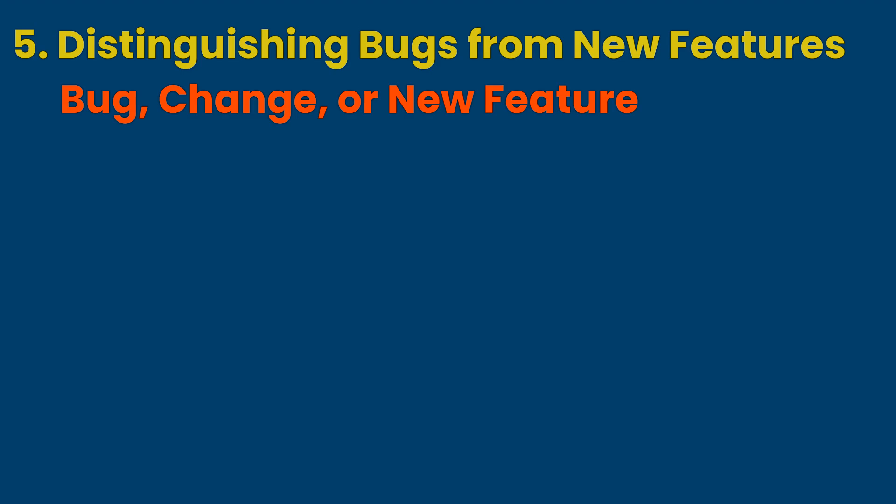Point five: distinguishing bugs from new features. Sometimes what appears to be a bug might actually be an intentional design change or new feature. As Airbnb does not always explain such changes in advance, it can leave users spending a lot of time to understand the nature of the problem and find an alternative method to handle it.